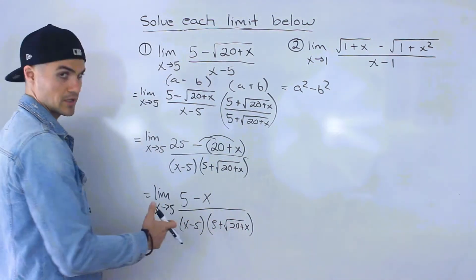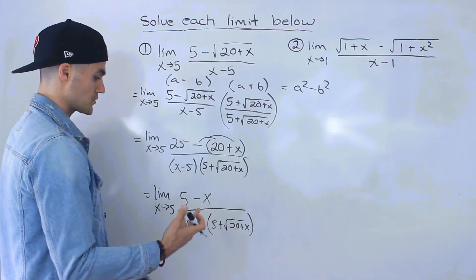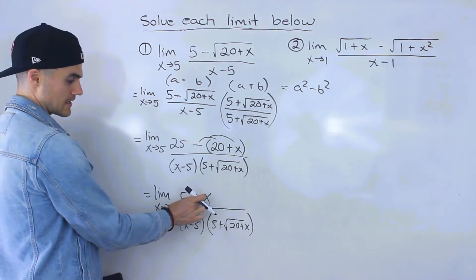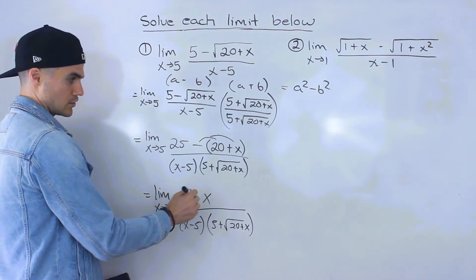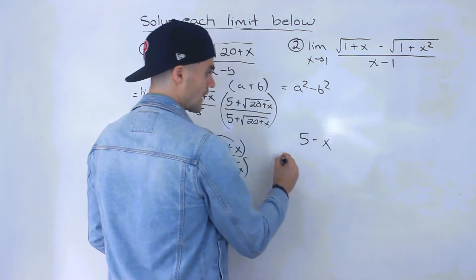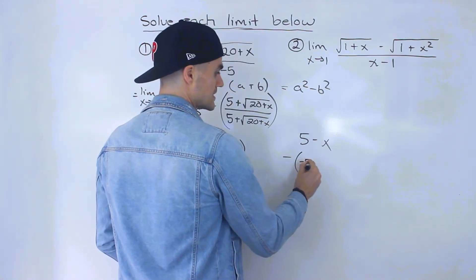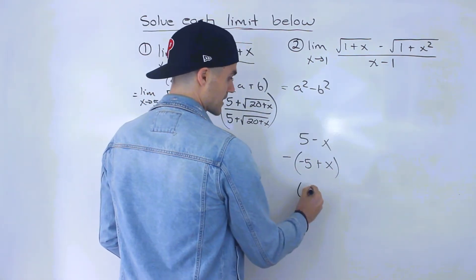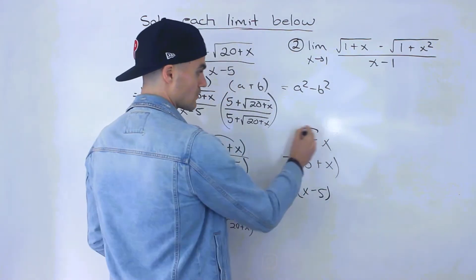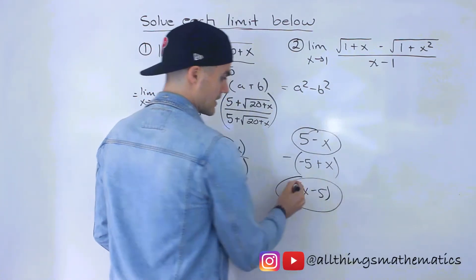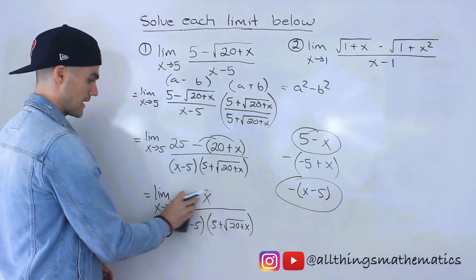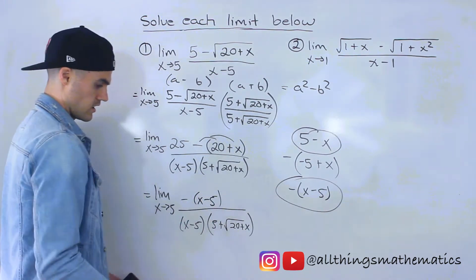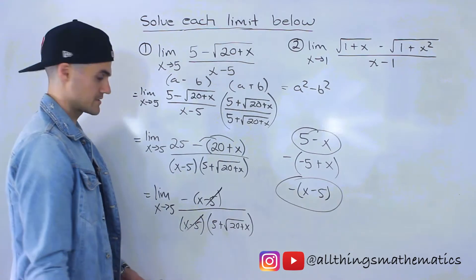Now we're trying to get rid of this (x minus 5) so we can plug in x equals 5. Notice we can't do that yet because (5 minus x) and (x minus 5) are not the same. But we can make them the same by factoring out a negative from the numerator. So (5 minus x), if we factor out a negative, gives us negative(x minus 5) — all the signs change. Now (x minus 5) and (x minus 5) are the same thing, so instead of writing (5 minus x) I'll factor out that negative and make it negative times (x minus 5).